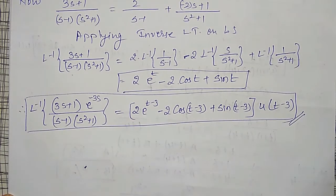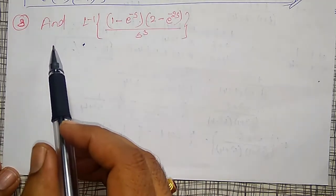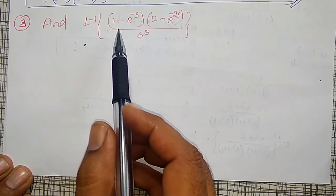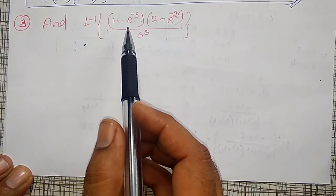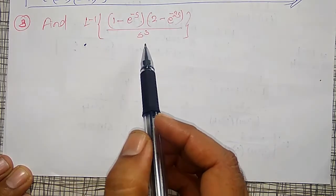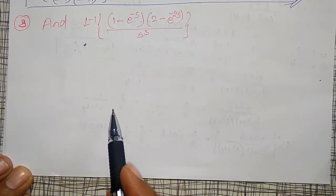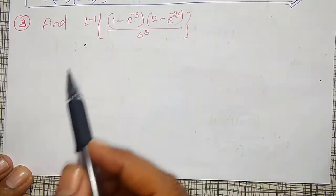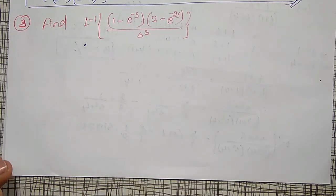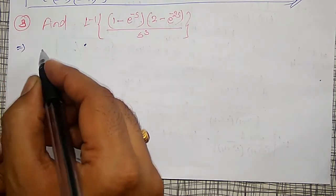Another example I am going to solve: find the inverse Laplace transform of (1 minus e^(minus s))(2 minus e^(minus 2s)) divided by s cubed. The denominator s cubed is standard, but the numerator is not in standard form, so I need to expand it first.